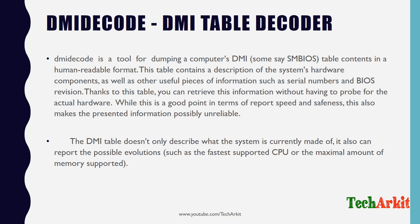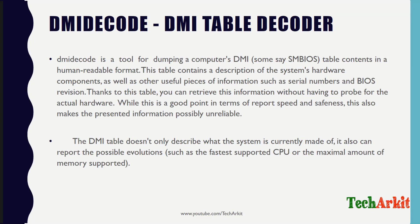Thanks to this table, you can retrieve hardware information without having to probe the actual hardware. This is beneficial in terms of speed and safety — for example, if you pull out hardware components, you may not be able to reassemble them safely. The DMI table not only describes what the system is currently made of, but also reports possible evolution, such as the fastest supported CPU or the maximum amount of memory supported.